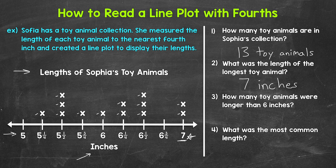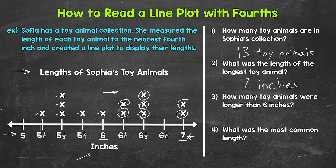Moving on to number three: how many toy animals were longer than six inches? Let's find six inches first, and we need all toy animals that were more than six inches — that means six and a quarter, six and a half, six and three quarters, and seven inches. So we count all the X's to the right of six: one, two, three, four, five, six, seven. There were seven toy animals longer than six inches.